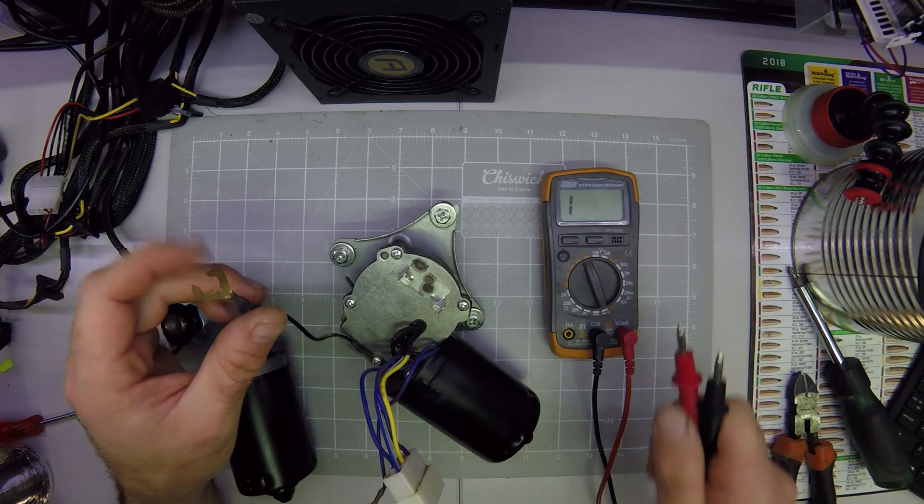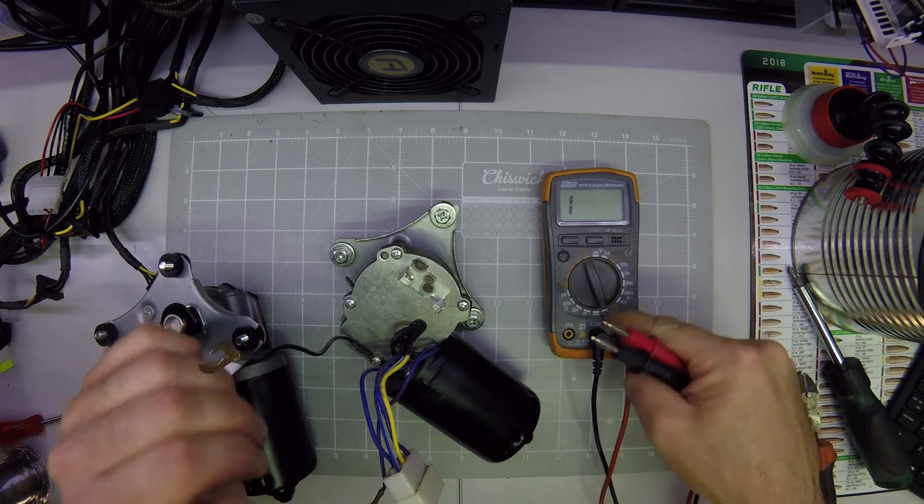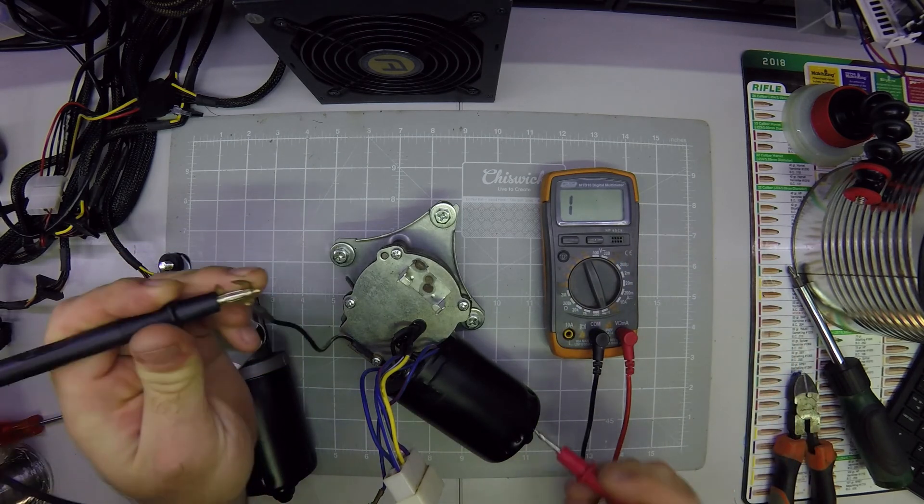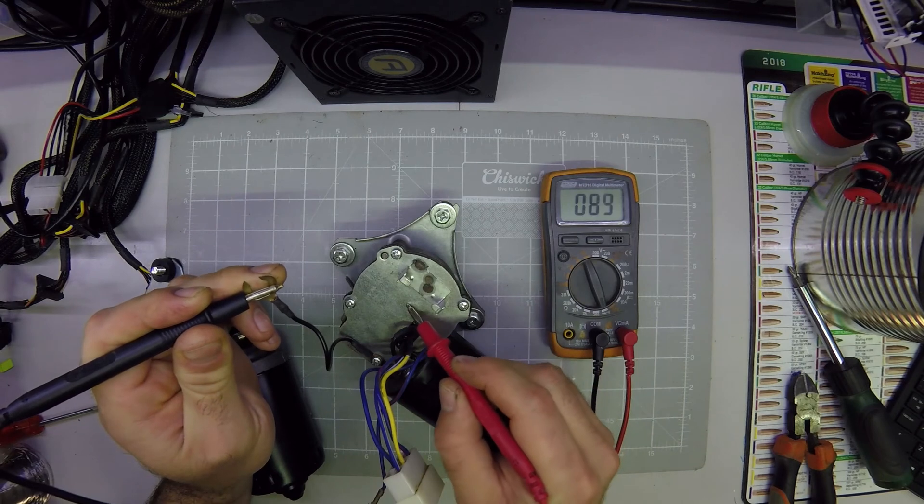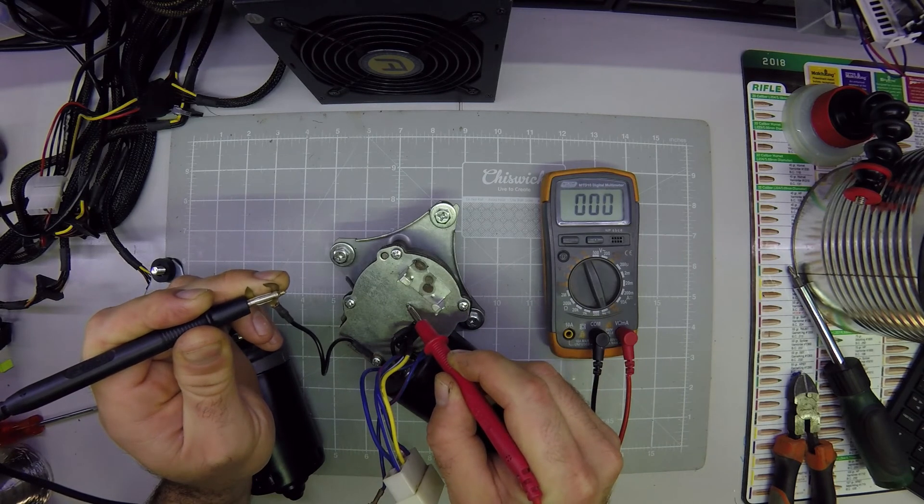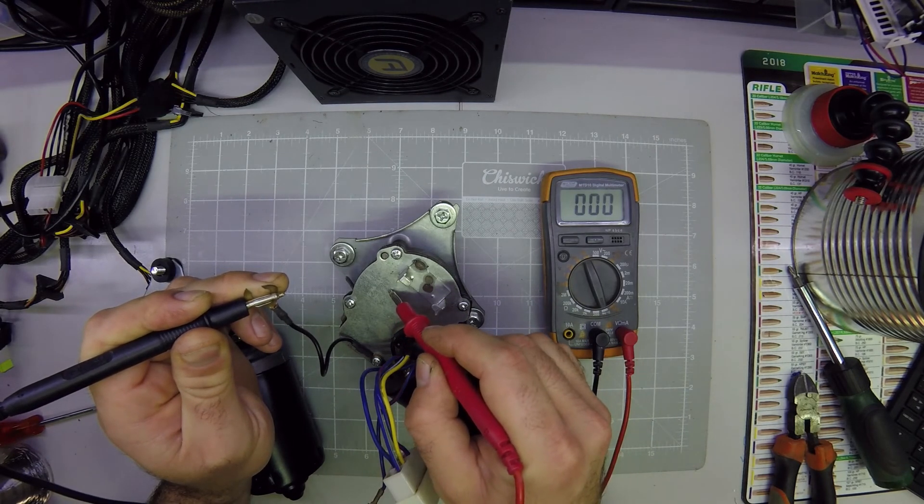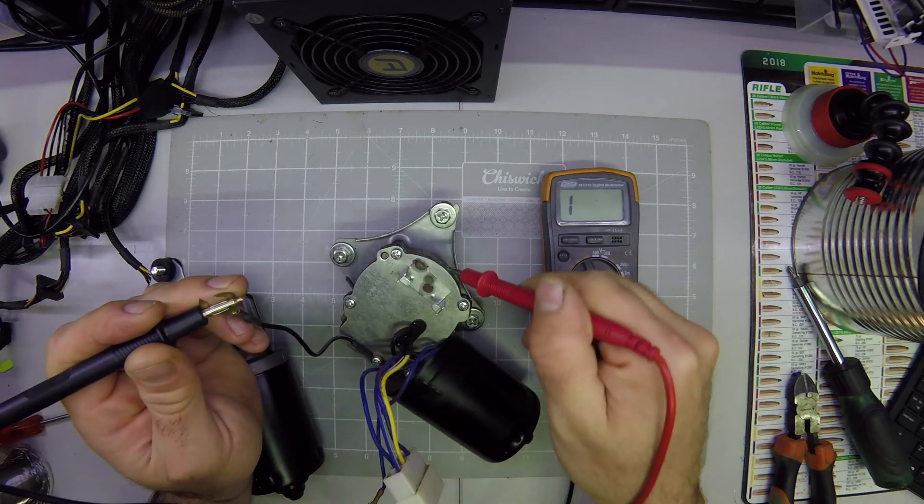So just to show you here we put the multimeter on continuity mode and we test. We can see there's zero resistance and it beeps. That means the ground is the same as the case.